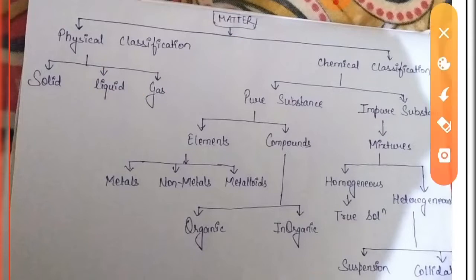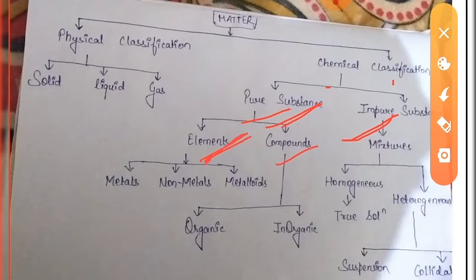Chemically, matter is classified into two parts. The first one is pure substance and the other one is impure substance. Pure substance is further classified into two parts which are element and compound. Pure substance is something which is made up of only a single constituent particle.